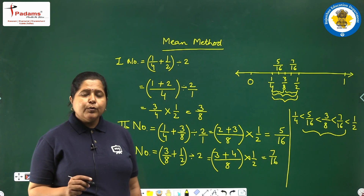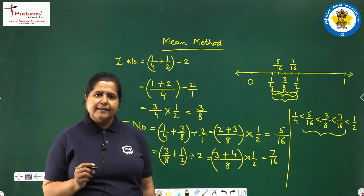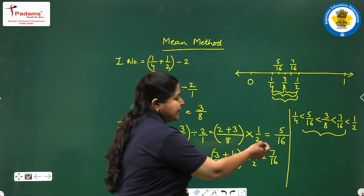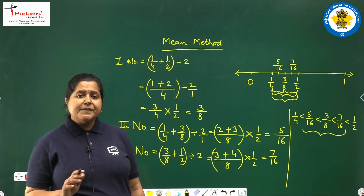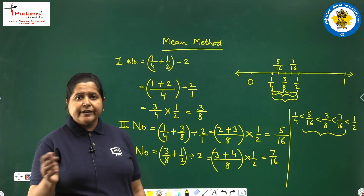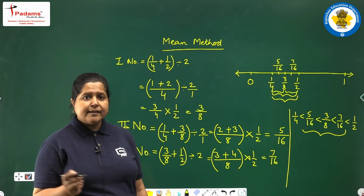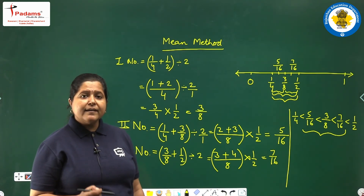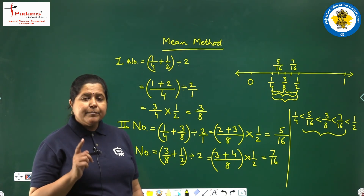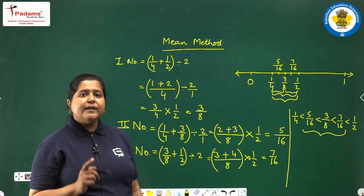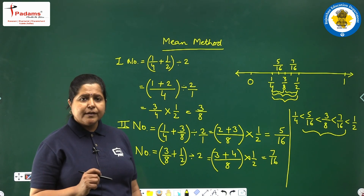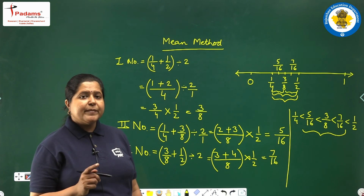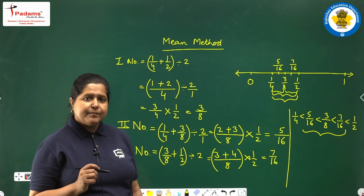You may use whichever method you like. Do not worry if the answers are different between two students — the answers from different children can be different, and that is fine, because there are infinitely many rational numbers between any two given rational numbers. So do not expect two students' answers to be exactly the same; they may vary.